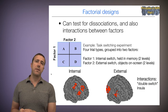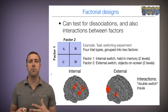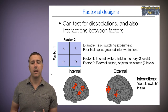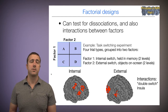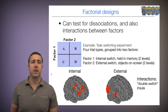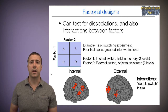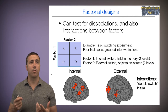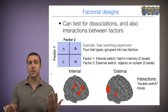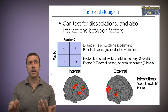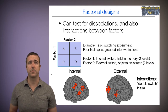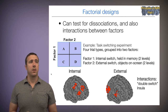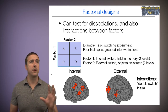Now let's look at factorial designs, which is another basic way of enhancing our inferential power. In a factorial design, I manipulate two factors at once, and I can test for dissociations in the areas that are activated, and I can also test for interactions between the two factors.